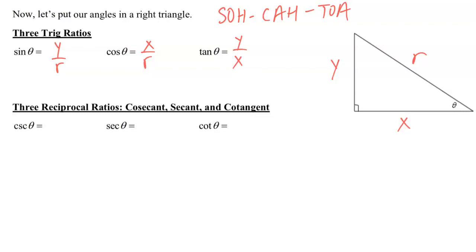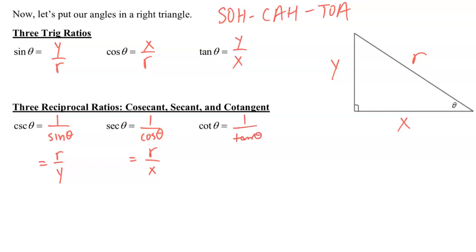The three reciprocal ratios — cosecant, secant, and cotangent — are just the reciprocals of the primary trig functions. Cosecant theta is the reciprocal of sine theta, so cosecant theta equals r over y. Secant theta is the reciprocal of cosine theta, so secant theta equals r over x. And cotangent theta is the reciprocal of tangent theta, giving cotangent theta equals x over y.